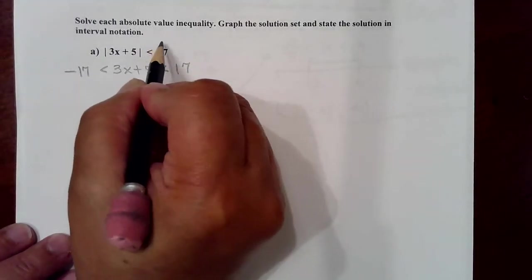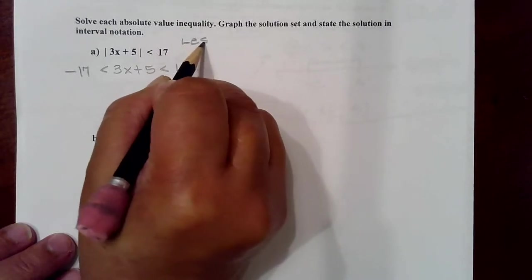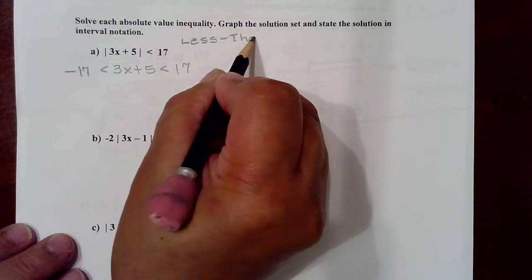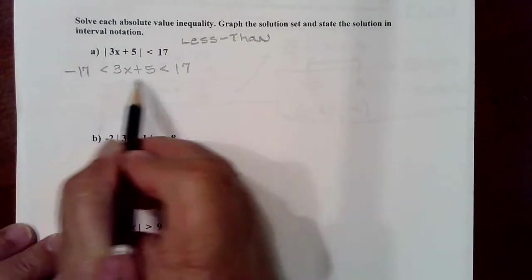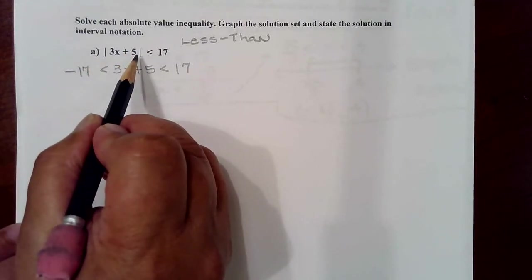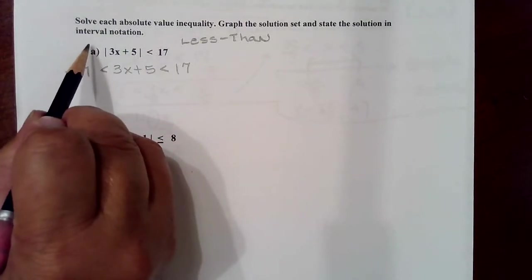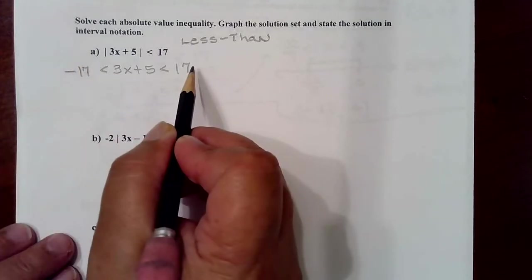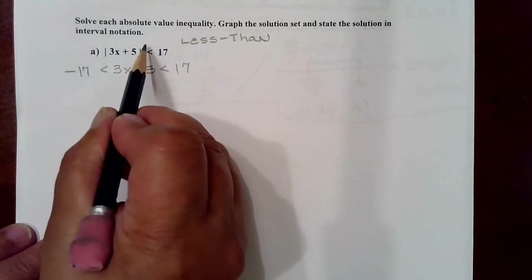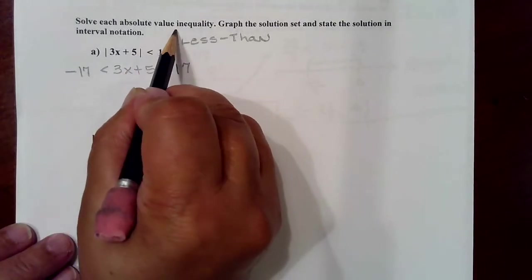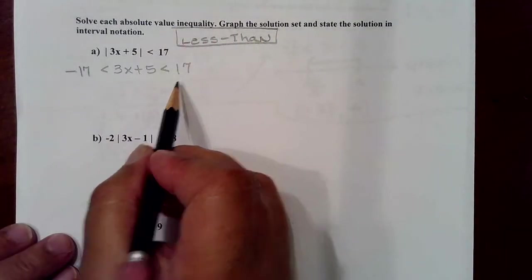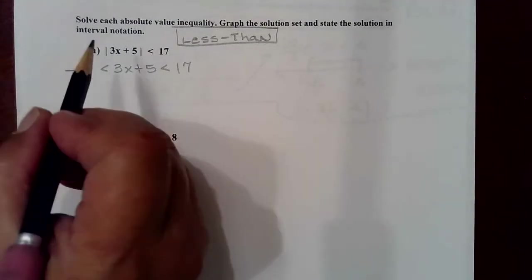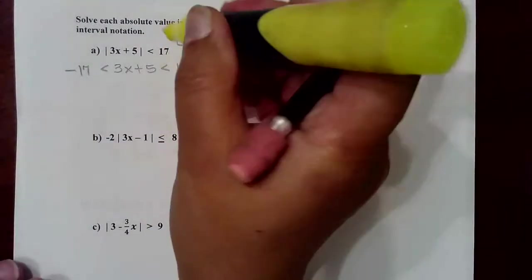We were looking at the less than case, and whenever you are solving the less than case, you have to make sure that you are in the less than case. Don't try to transform into the compound inequality before you isolate the absolute value expression, because if there's a negative multiplier out here and you have to divide to get rid of it on both sides, it's going to change this from a less than to a greater than case, and then you'll be using the wrong setup. So make sure that before you go into the actual setup for less than, there is no multiplier out here that's going to change the direction and the kind of setup that you're going to use.